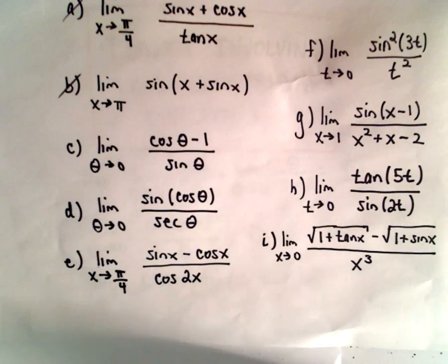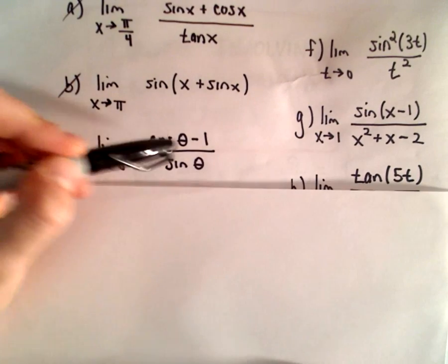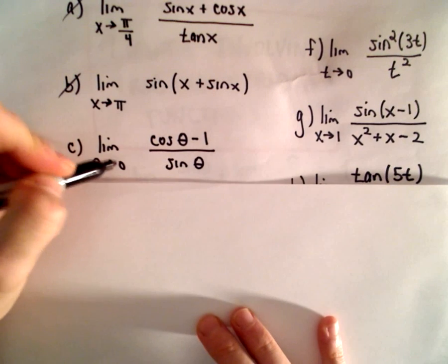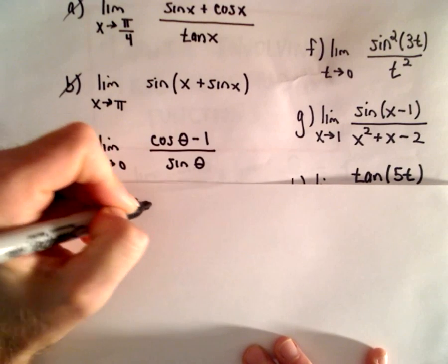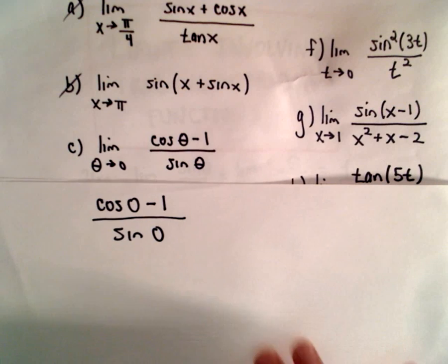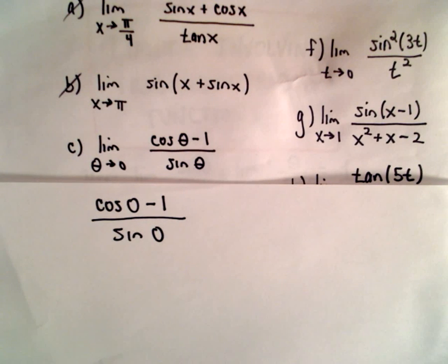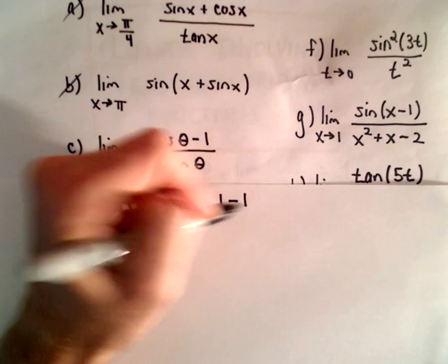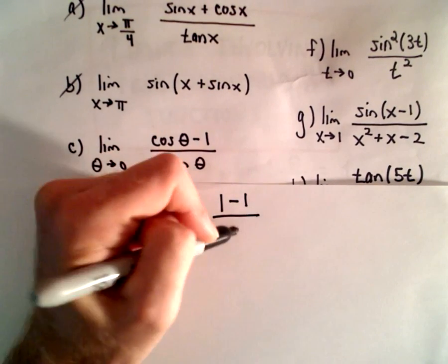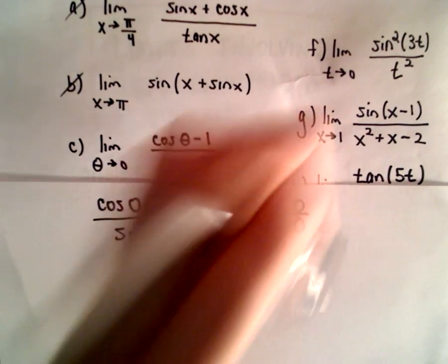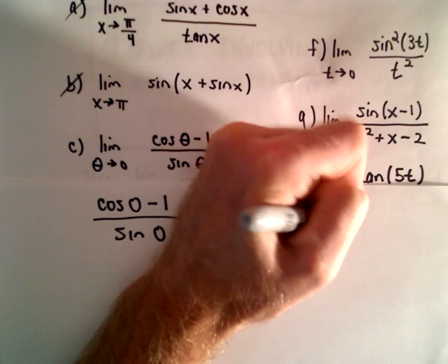So part C: we have the limit as theta approaches 0 of cosine theta minus 1 over sine theta. To get started, the first thing I always do is plug in the value. So theta is approaching 0, so we would have cosine 0 minus 1 over sine of 0. Cosine of 0 is 1, so we have 1 minus 1 in the numerator. Sine of 0 is also 0. So we've got 0 over 0, which is what's known as an indeterminate form.